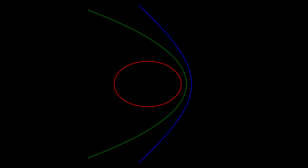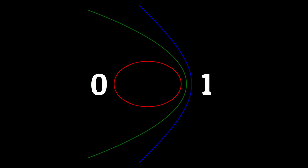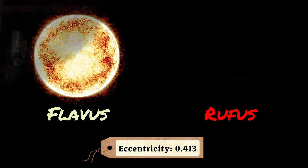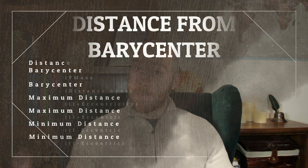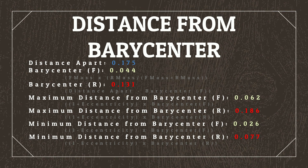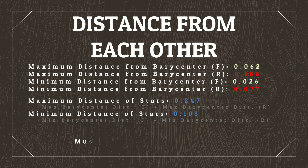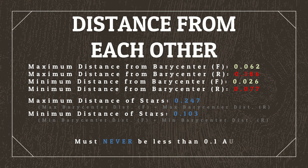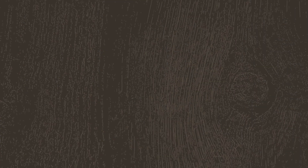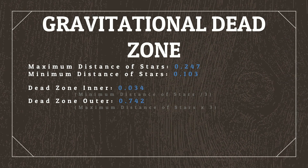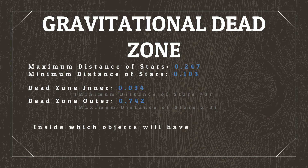We also need to give them an eccentricity — that is, how elliptical their orbit is — with 0 being a perfect circle and 1 forcing the movement to no longer be a circle. Let's give them an eccentricity of 0.413. From here, we can work out a huge number of factors all measured in AU, such as the maximum and minimum distance of each star from the barycenter, the maximum and minimum distance of each star from each other — which should never, ever be less than 0.1 AU — and the inner and outer points of the gravitational dead zone for the stars, inside which objects will have unstable orbits due to the gravitational interaction between the stars.